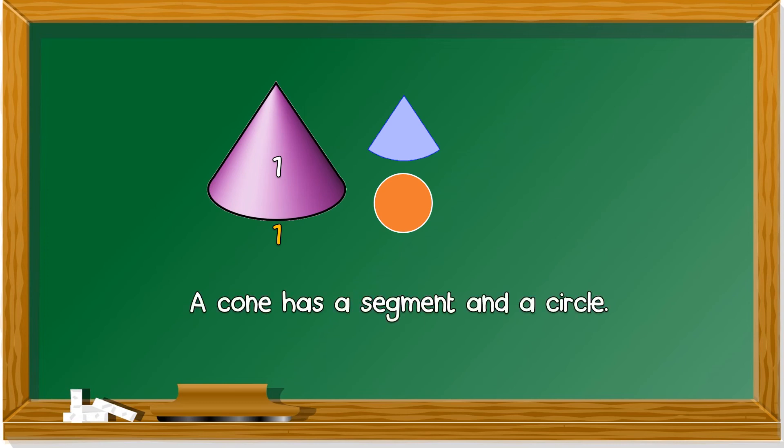What shape is this? A cone. What is its basic shape? A segment. And? Yes, circle. So you see where's the segment? It's this whole thing, it's a segment. Below, the base dapatnya circle. So a cone has a segment and a circle.